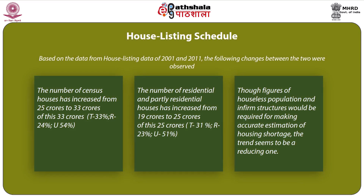Based on the house listing data of 2001 and 2011, the following changes were observed. Regarding house quantity, the number of census houses has increased from 25 crore to 33 crore. Of this 33 crore, which accounts for 33 percent increase in total, rural households increased by 24 percent and urban households by 54 percent. The number of residential and partly residential houses has increased from 19 crores to 25 crores, with rural at 23 percent and urban at 51 percent. Though figures of houseless population and infirm structures would be required for accurate estimation of housing shortage, the trend seems to be a reducing one.